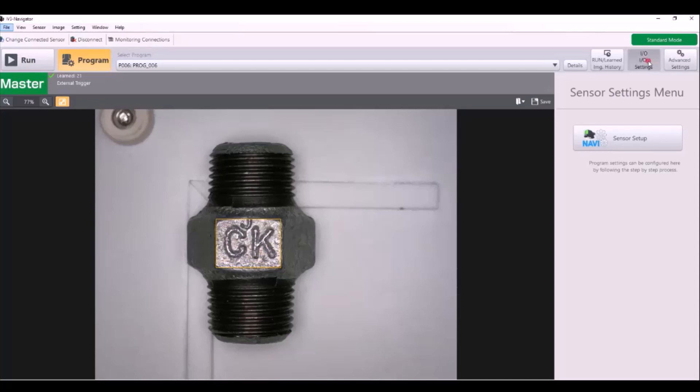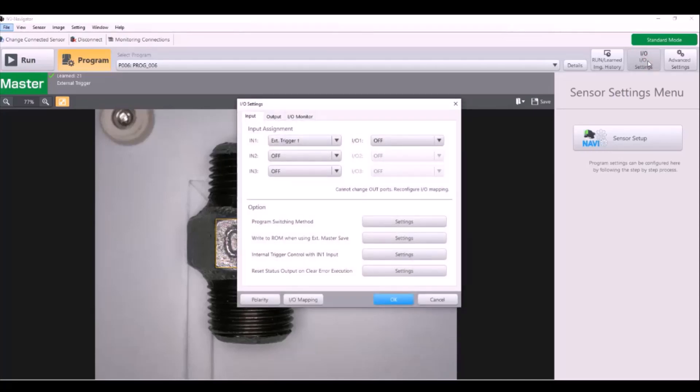The next thing we're going to do is go into the I/O settings in IV3 Navigator and just check the polarity. You can see I'm on PNP right now, but you can switch between. For this example, I want PNP and hit OK.